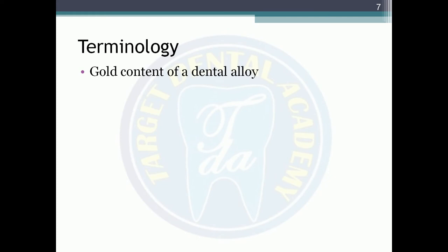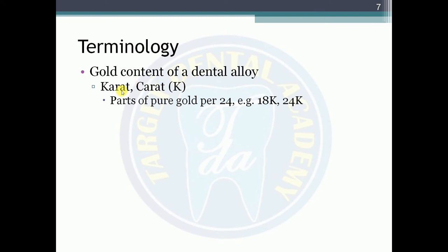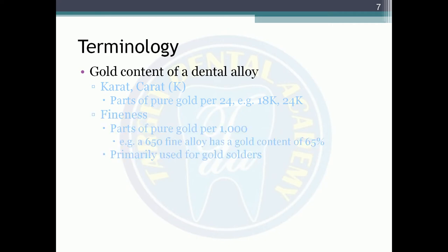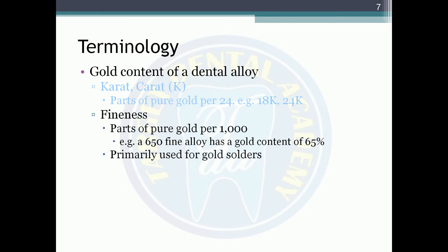The gold content of a dental alloy is expressed in carats — parts of pure gold per 24. For example, 18 carat means 18/24 gold. Fineness refers to parts of pure gold per thousand; a 650 fine alloy has 65% gold content. Fineness is primarily used for gold solders.